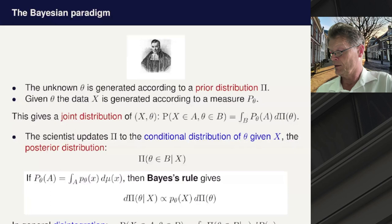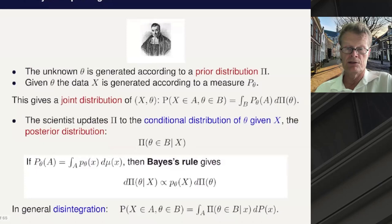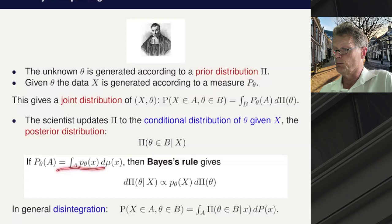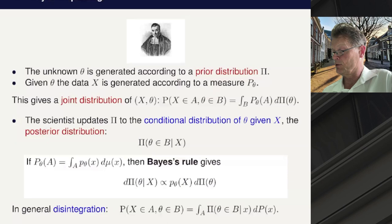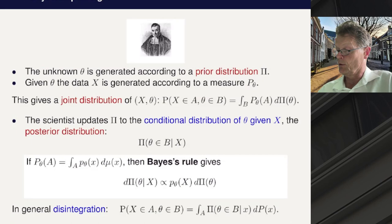Bayes' rule says that the posterior distribution has a density relative to the prior, which is given by the likelihood at the observed data. For non-parametric Bayesian statistics, we cannot always use Bayes' rule, because the assumption that the model is dominated by some measure mu is not always satisfied. But the abstract definition is always valid — you sometimes have to define it as a disintegration using Kolmogorov's definition of conditional probability. It's always a conditional distribution of the parameter given the data.